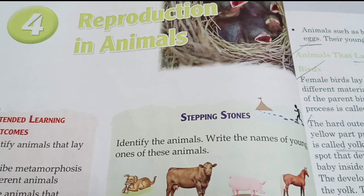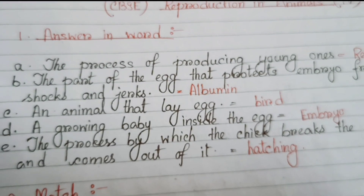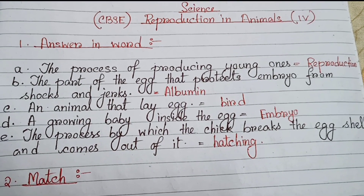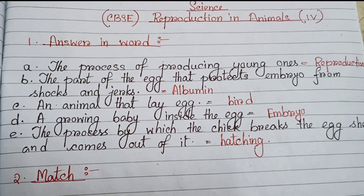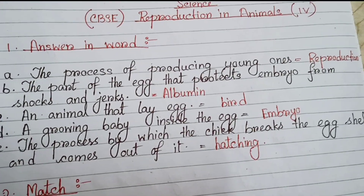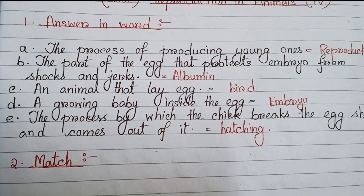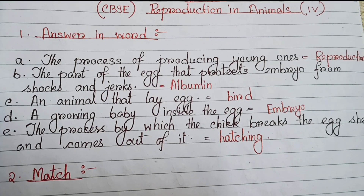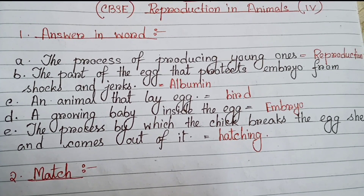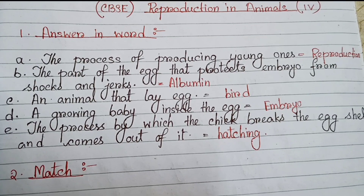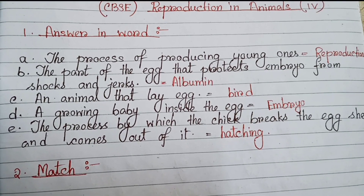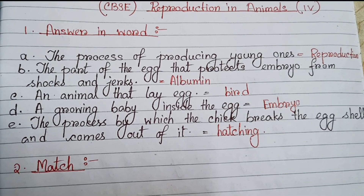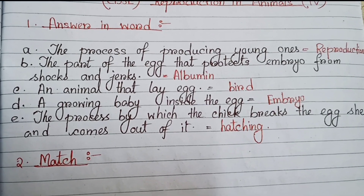Let's start Reproduction in Animals. Number one: Answer in words. (a) The process of producing young ones is reproduction. (b) The part of the egg that protects the embryo from shocks and jerks is albumin. (c) An animal that lays eggs is a bird. (d) A growing baby inside the egg is an embryo. (e) The process by which the chick breaks the egg shell and comes out is hatching.